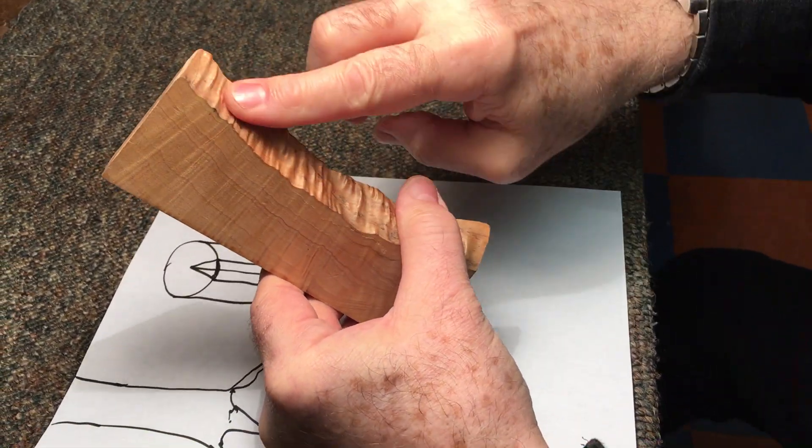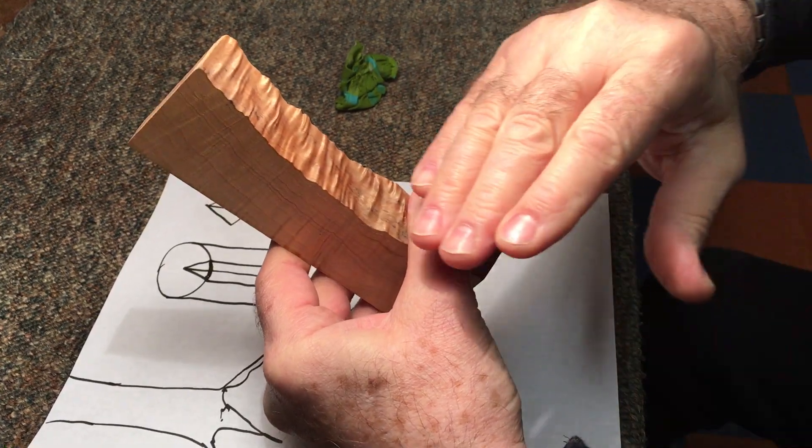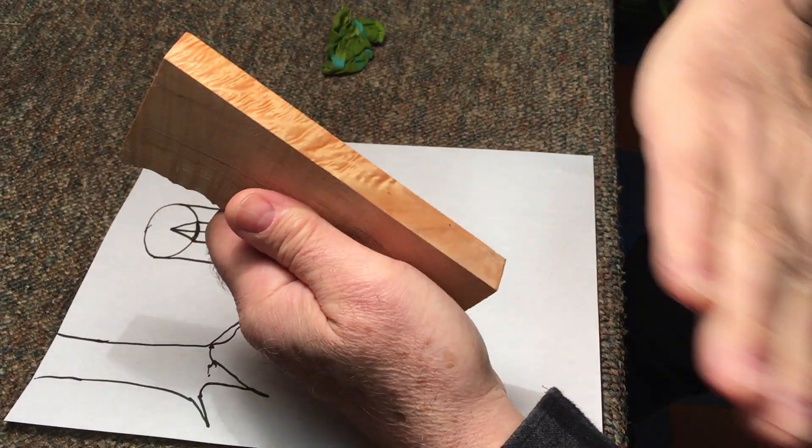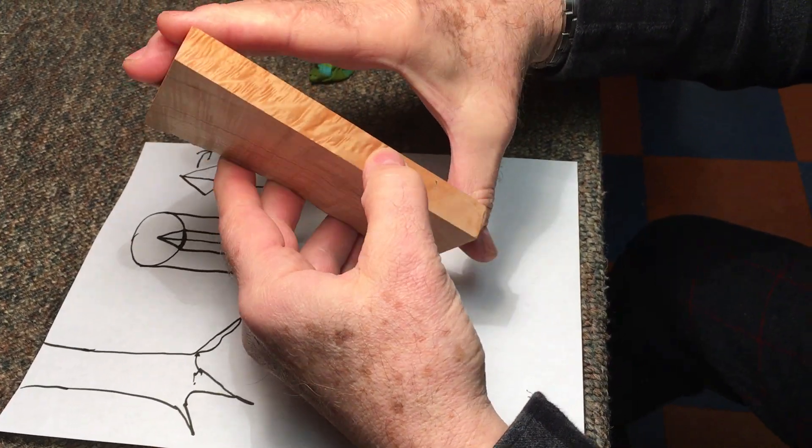This is the exterior of the tree, right beneath the bark. And the grain of the wood is undulating. And when you cut it off straight, you get this effect. Very pretty.